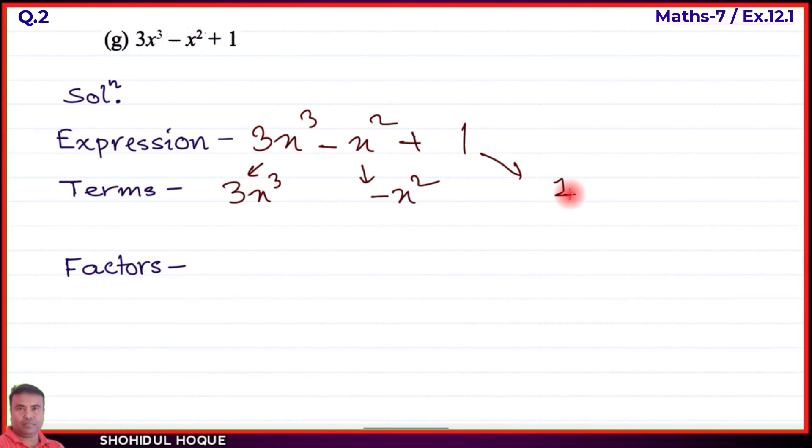For factors: the first term 3x³ has factors 3, x, x, and x. Drawing branches: the term has four factors total.